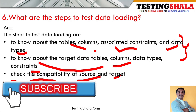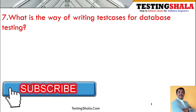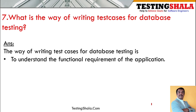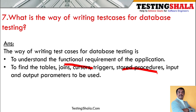The seventh question is: what is the way of writing test cases for database testing? First, you should understand the functional requirements of the given application. Second, you should be able to identify tables, joins, cursors, triggers, stored procedures, and input and output parameters that will be used as part of database testing.